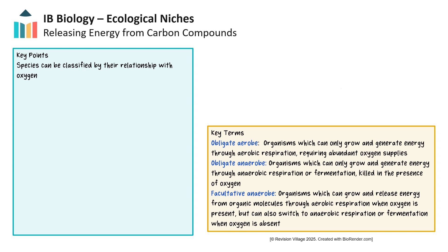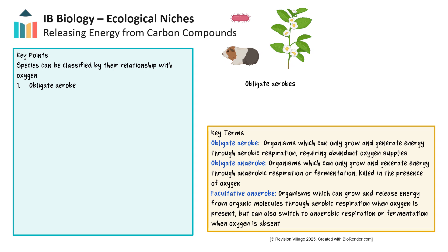Some organisms require oxygen to metabolize carbon compounds and release energy, while others cannot survive in oxygen-rich environments. The term obligate means that something must be done. The term aerobe refers to an organism that requires oxygen to grow, survive, and function. So an obligate aerobe is an organism that must have oxygen to survive and grow. Humans are obligate aerobes — we require oxygen to break down carbon compounds like glucose through aerobic cellular respiration.